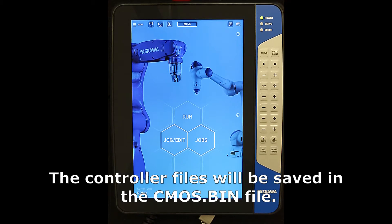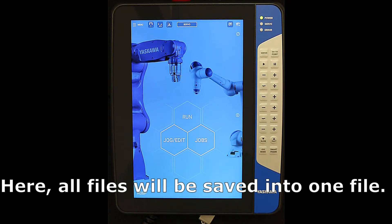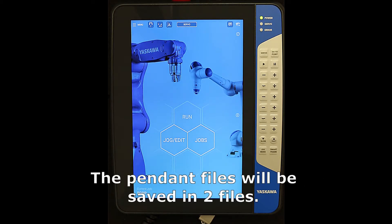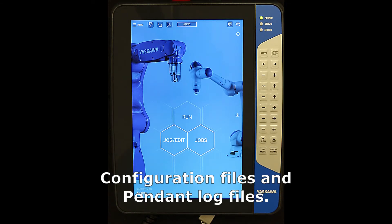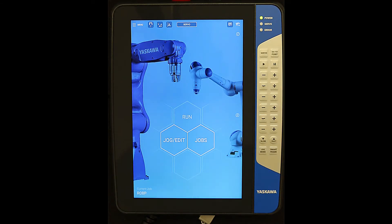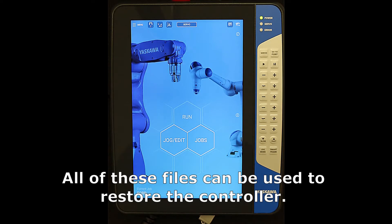The controller files will be saved in the CMOS.bin file. Here all the files will be saved into one file. The pendant files will be saved in two files named configuration files and pendant log files. All these files can be used to restore the controller.